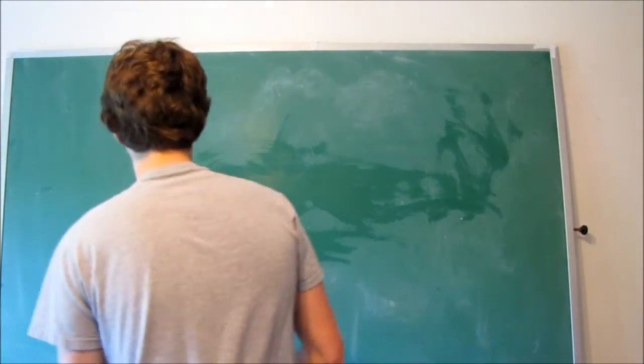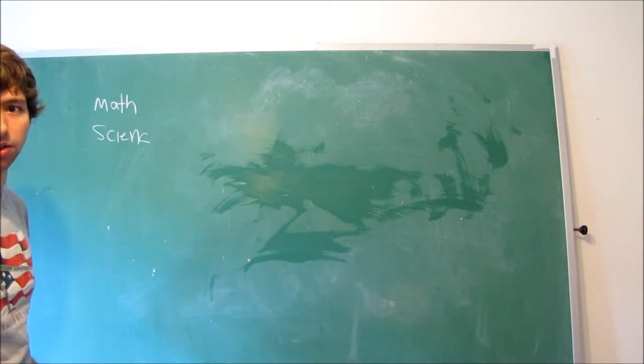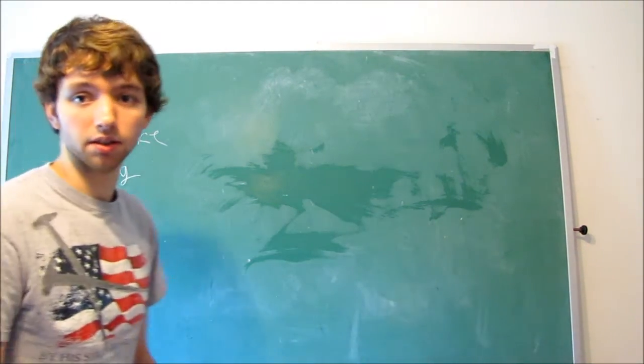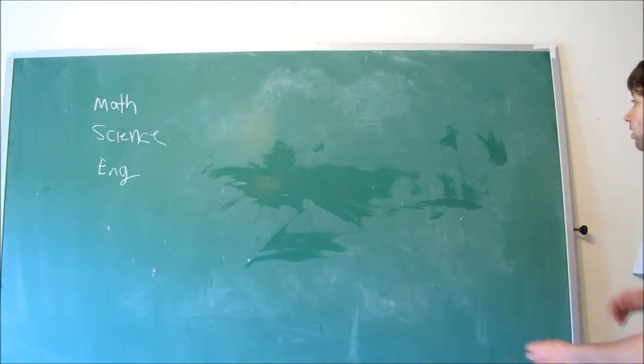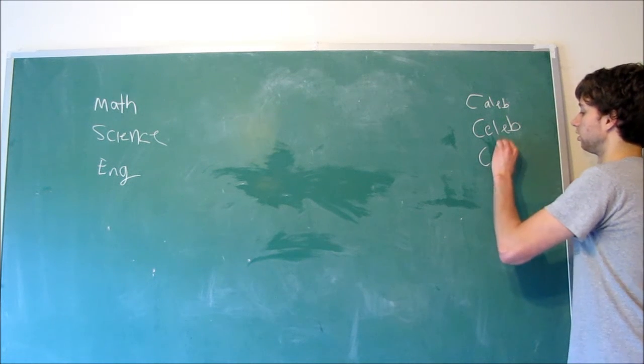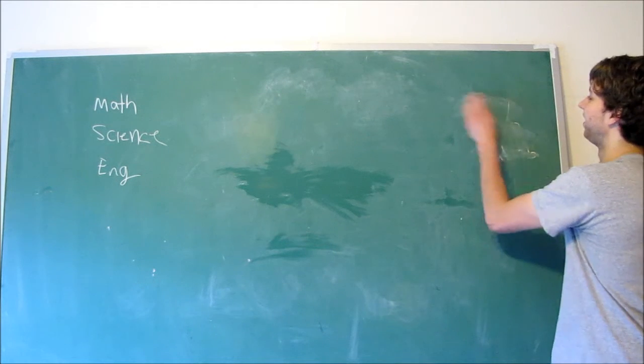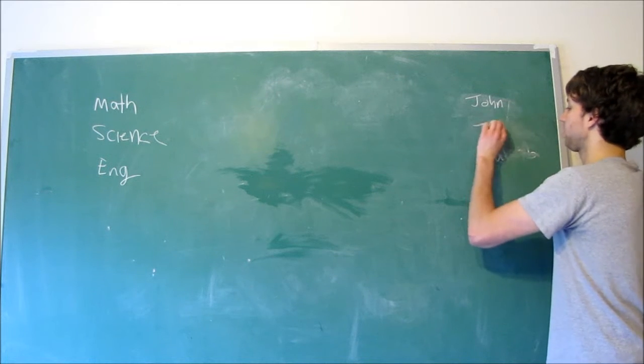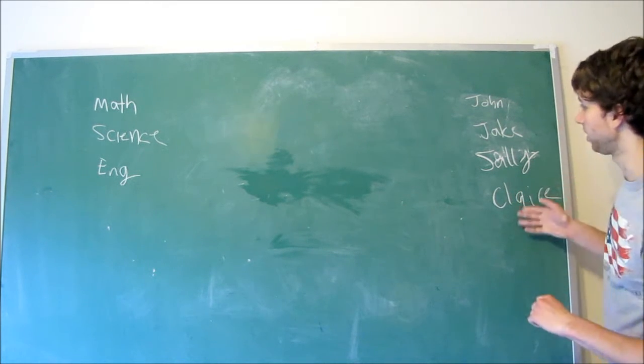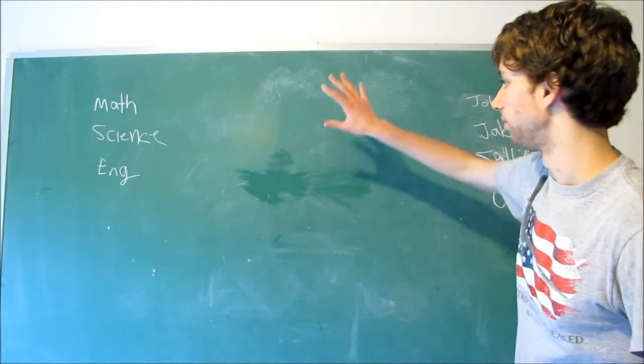Let's say we have our classes over here and our students over here. First things first. We have math, science, and English. Obviously it would be more in-depth, like math 101, math 205 or 1200 or whatever. But just for simplicity's sake, let's say these are the only three classes in the college. Then we have all of our students. We have Johnny, and Jake, and Sally, and Claire. So here are all of our students for our classes.